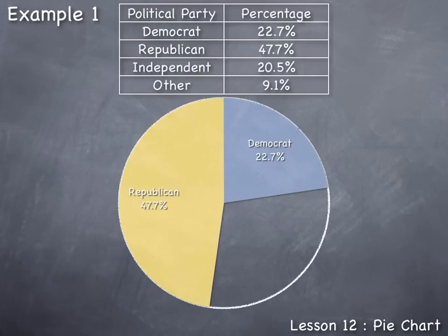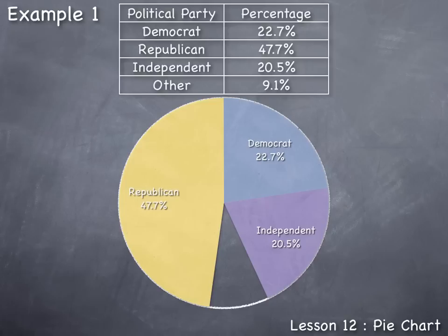Next I'll draw a section of the pie representing the Independents. The Independents occupy about twenty point five percent of the pie chart. Twenty point five percent is four point five percent short of a quarter, so I draw a section to that size, label it Independent, and its corresponding value twenty point five percent. The remaining nine point one percent of the pie goes with the Other group, so we label the last piece Other and give its value nine point one percent.